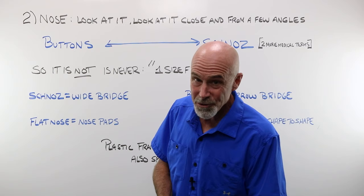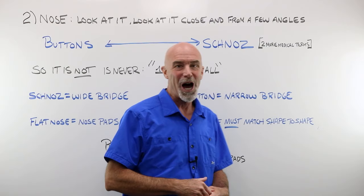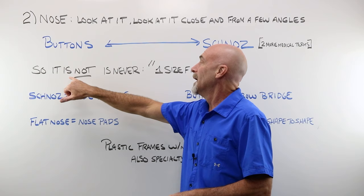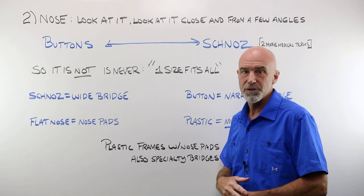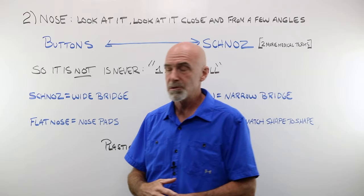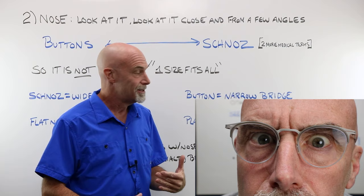If you have been in the opticianry game for a little while, you probably have also noticed that noses come in all different sizes. On one end of the scale, you've got your petite little buttons, and on the other, you've got your great big old schnoz. And yes, those are two more medical terms that you will need to memorize. Because you've got a sliding scale of buttons to schnoz's, it is not, it is never, a case of one size fits all. So the second thing in our triage that we look at when we're looking at frame fit over fashion is how that frame fits on that customer's nose. How do we do that? We look. We look at it very closely, and we look at it from a few different angles.